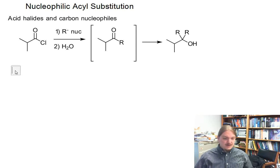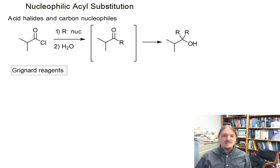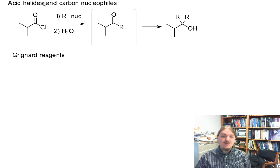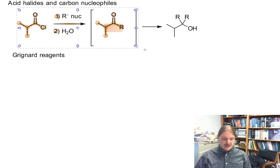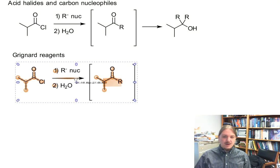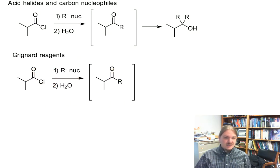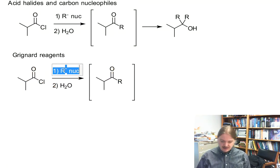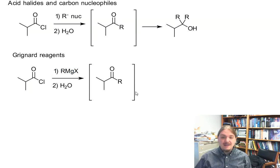We're going to start with the types of nucleophiles that you've probably encountered before, which are Grignard reagents. In the Grignard reagent case, our carbon nucleophile is RMgX, R with magnesium halide.